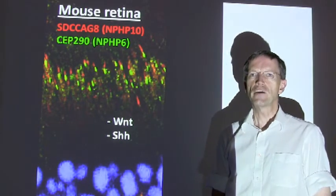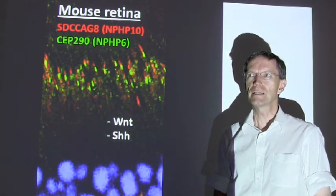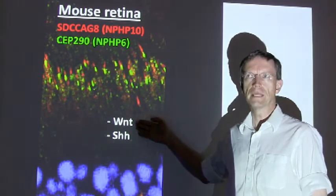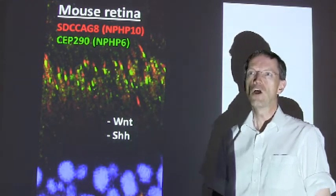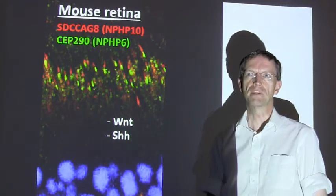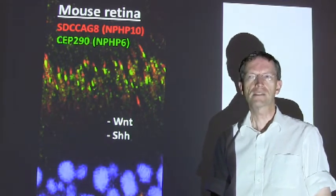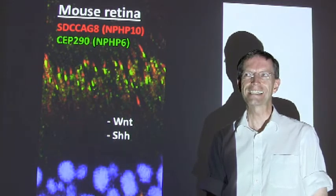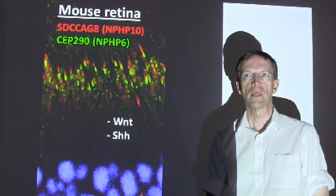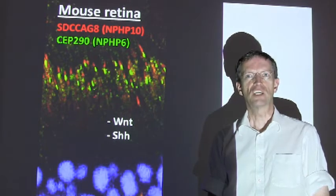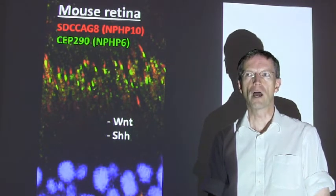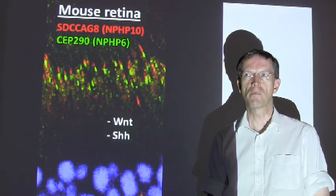By studying cilia and centrosomal function, signaling pathways such as non-canonical Wnt signaling and Sonic Hedgehog signaling were implicated in pathomechanisms of ciliopathies. However, how loss of function of centrosomal proteins leads to ciliopathies is still mostly unknown, and this is not surprising because genetic mapping studies have shown that there are several dozen more unknown ciliopathy genes.